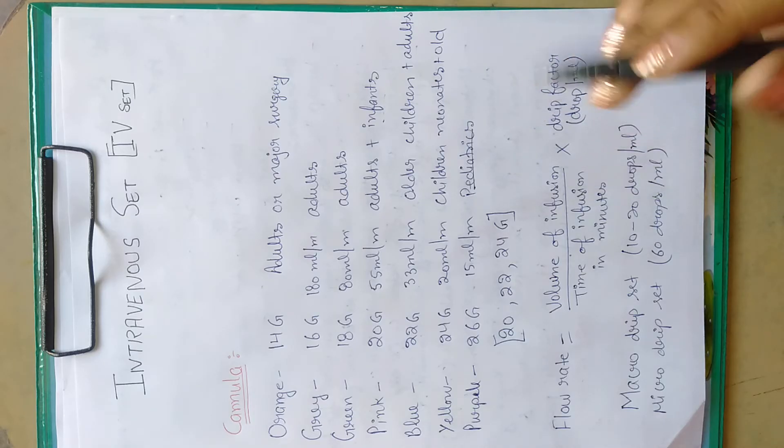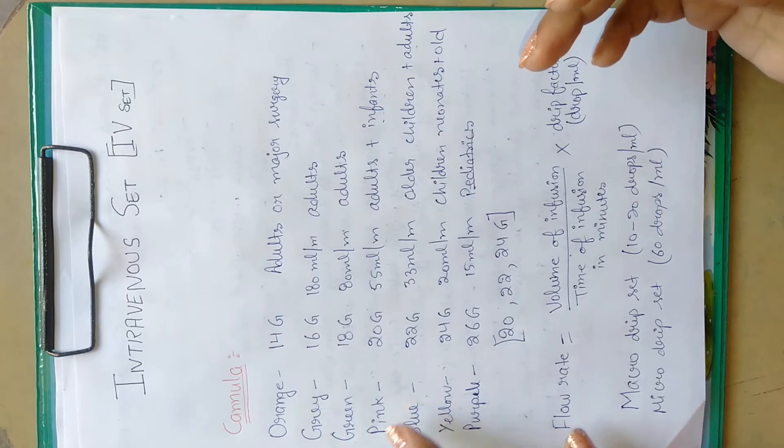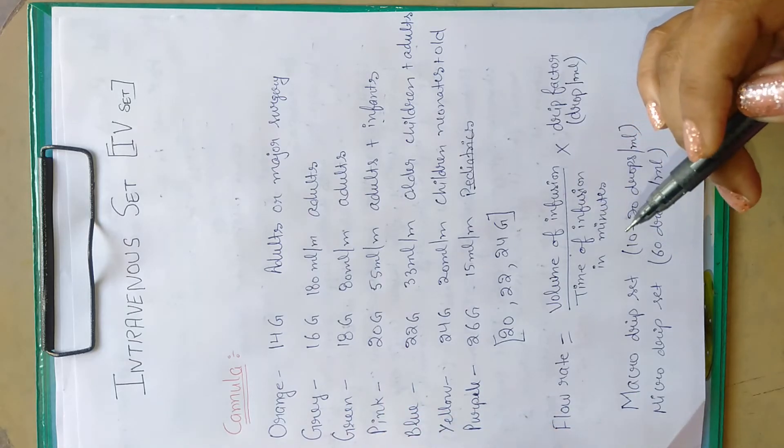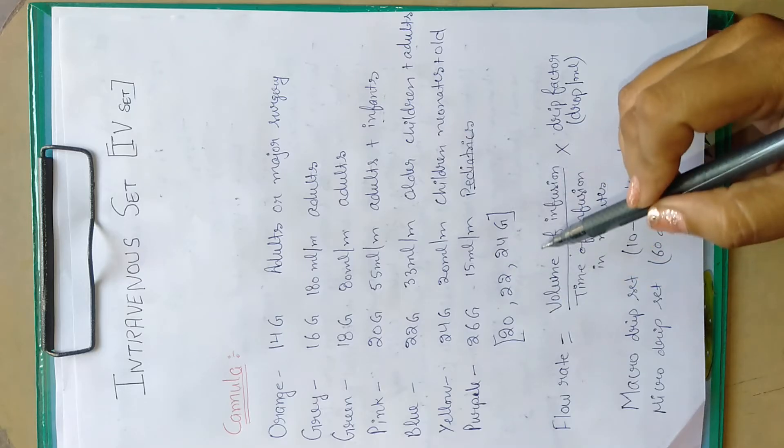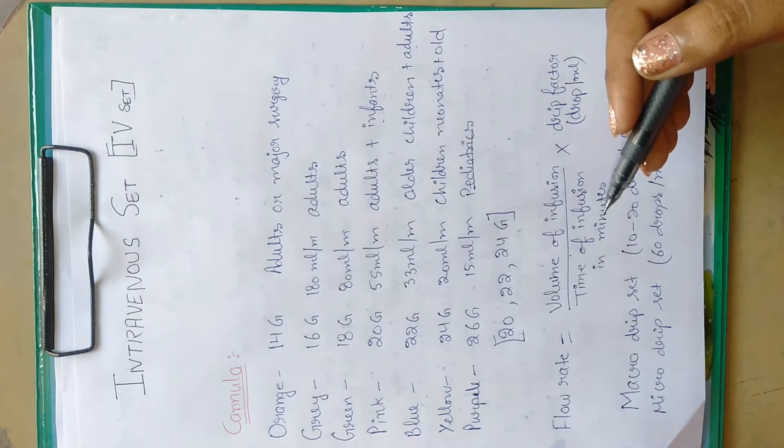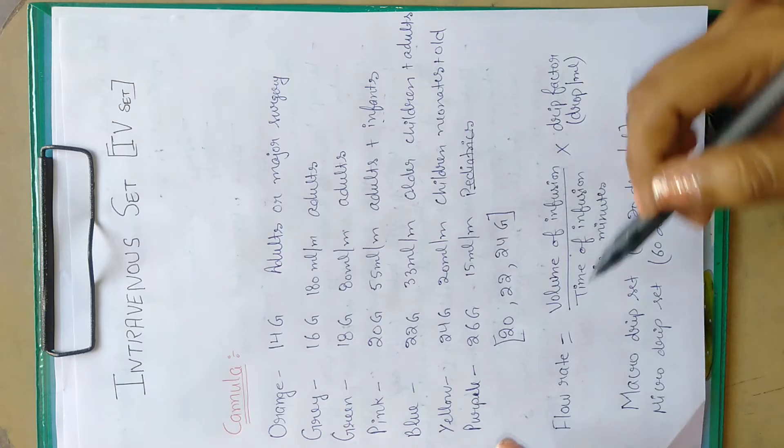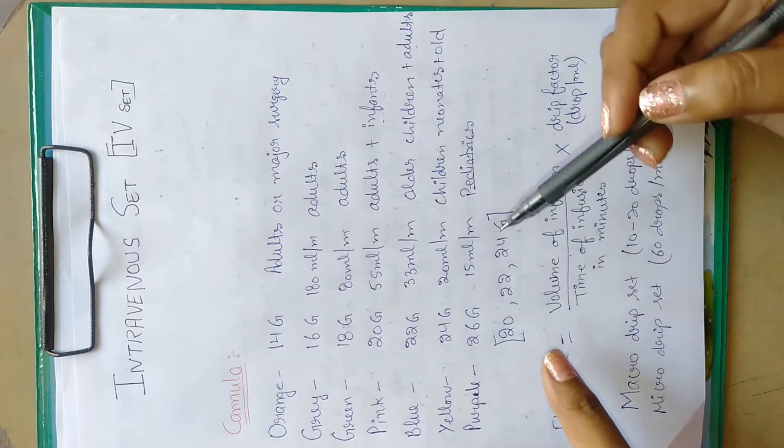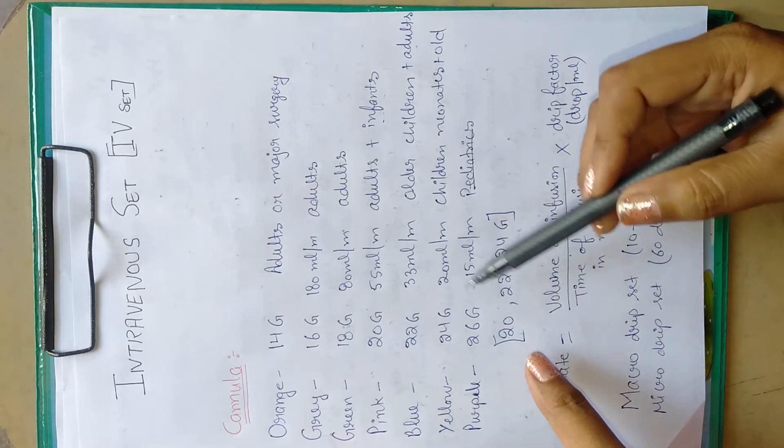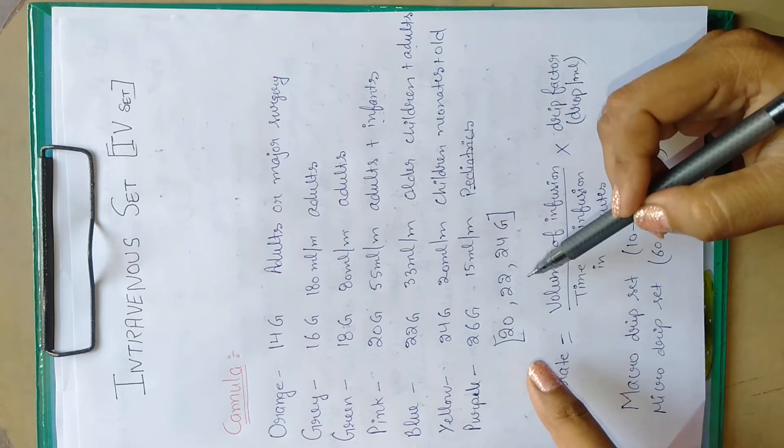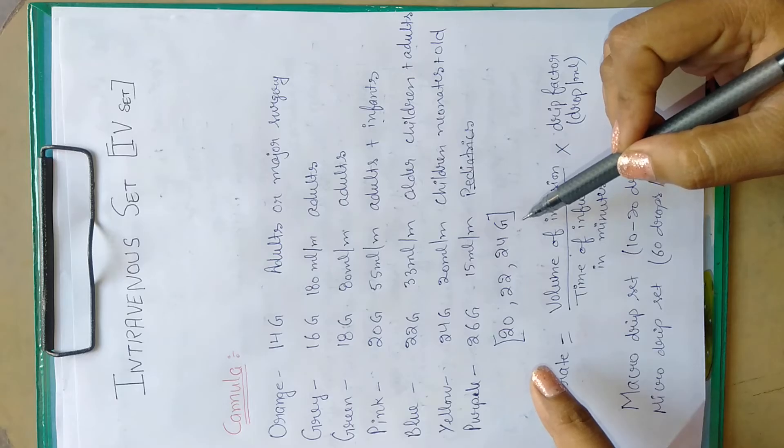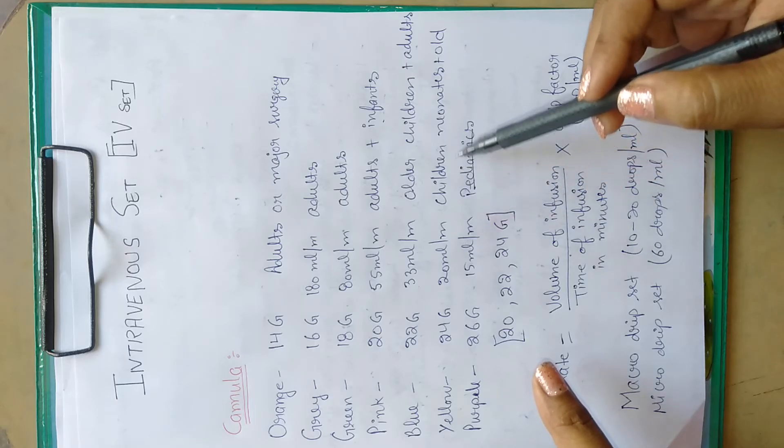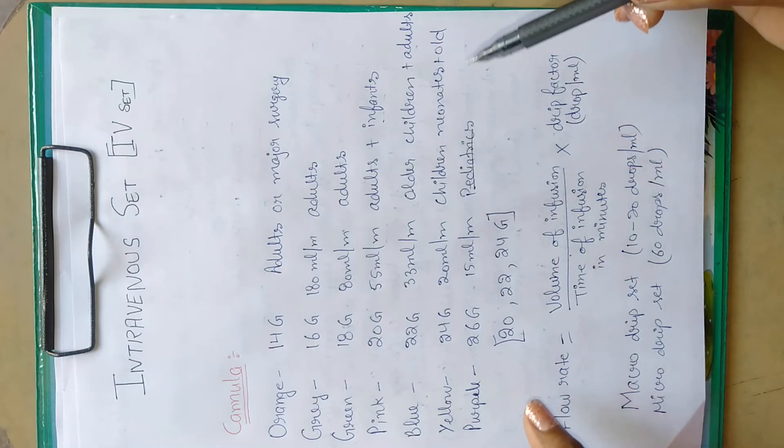Mostly in hospitals, these cannulas are available. But in nursing fields, 20 to 24 gauge cannulas are typically used. 22 gauge is used for older children and adults, 24 gauge is used for children, neonates, and older people.